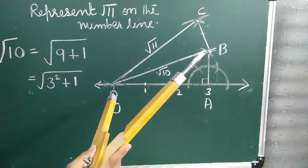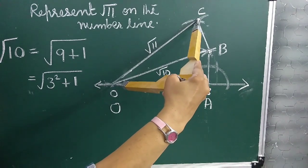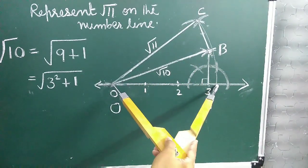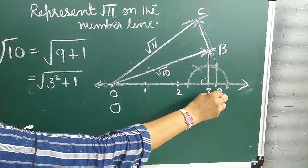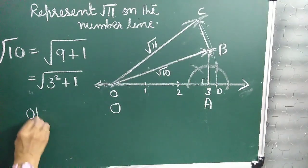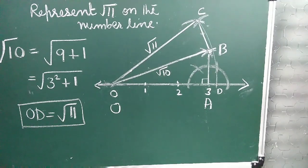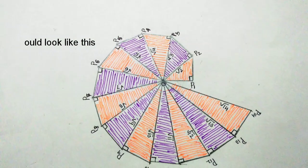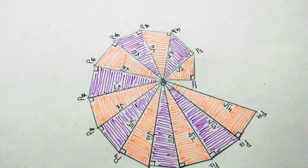Now let us see how to locate root 11 on the number line. With O as center and OC as radius, draw an arc which intersects the number line at point D. Then OD represents root 11.